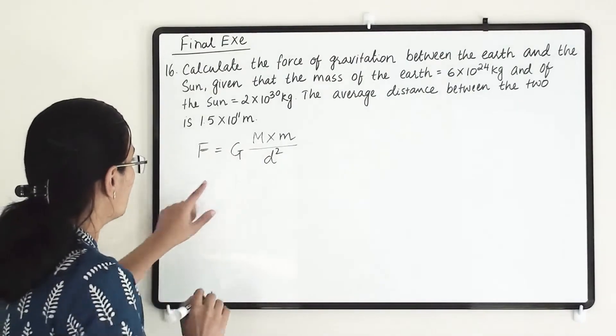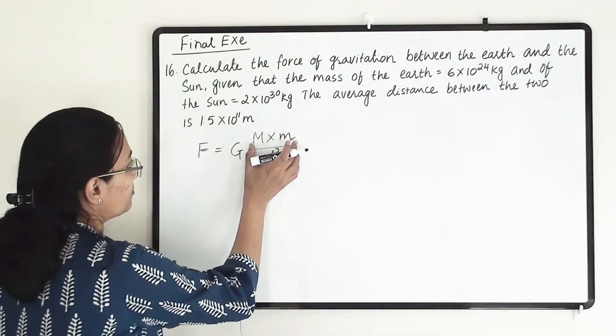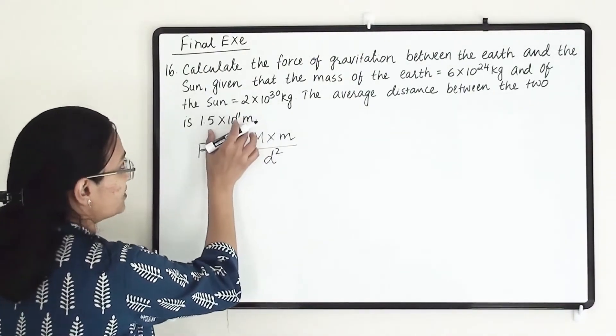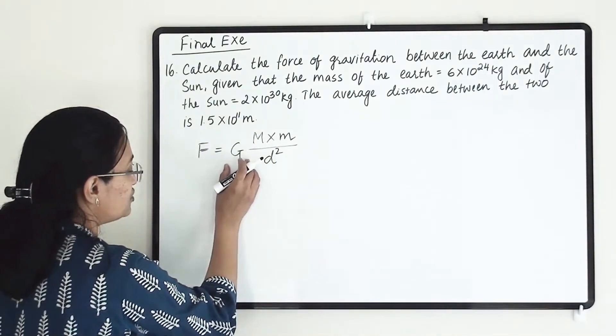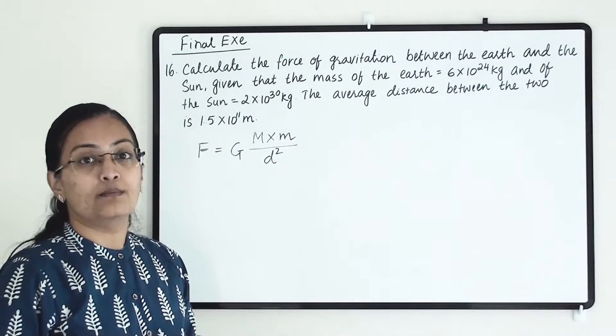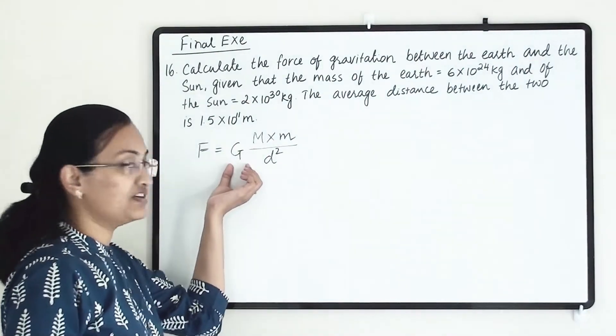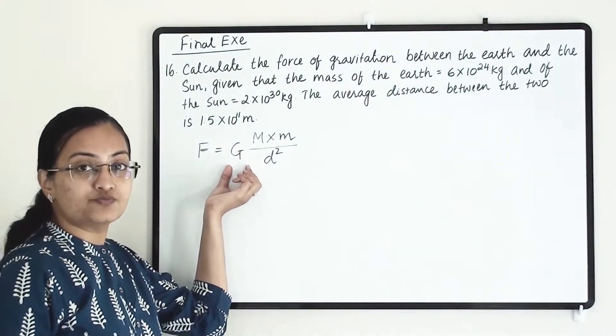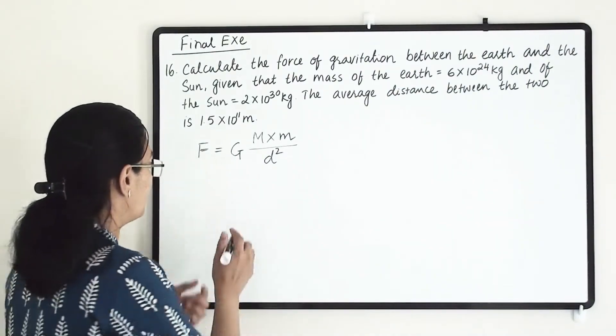Here we know both objects' masses and the distance. G equals 6.7×10⁻¹¹, which is the gravitational constant as per the universal law of gravitation.